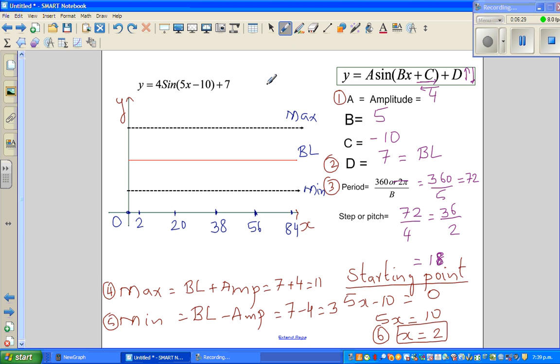So your sine graph starts, this is a positive sine graph. The sine graph starts at your baseline. So let me use a green color for plotting the points. So at 2, this is your starting point. Your baseline, it starts at your baseline.